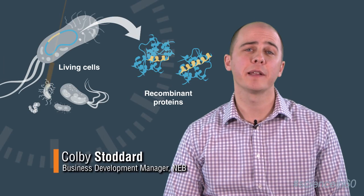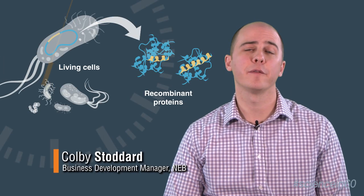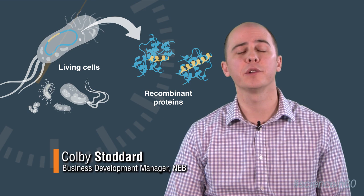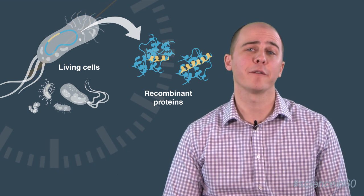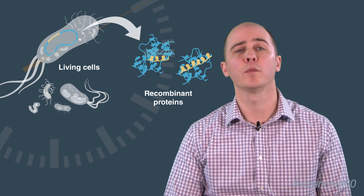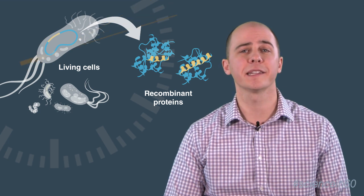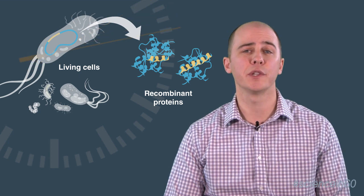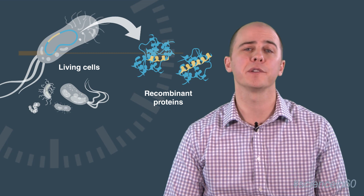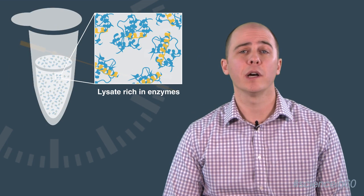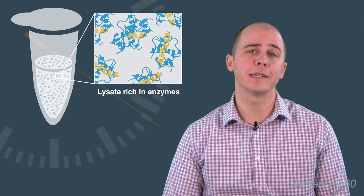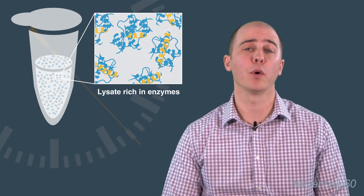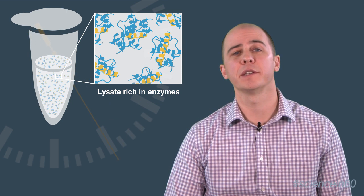Living cells can be genetically modified to perform novel functions such as the production of recombinant proteins. However, these genetic modifications often conflict with normal cellular processes and result in sick cells or mutational events that negatively impact research efforts. These shortcomings can be overcome through removing the cellular membrane, which leaves a lysate that is rich in enzymes that can perform both transcription as well as translation.